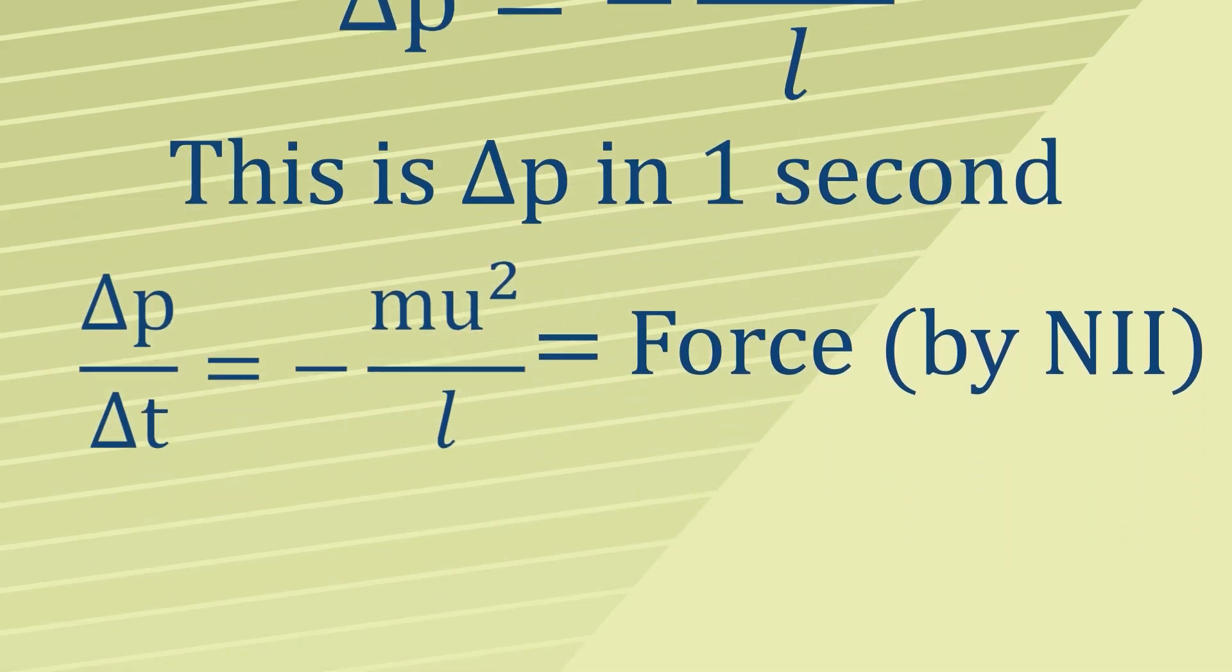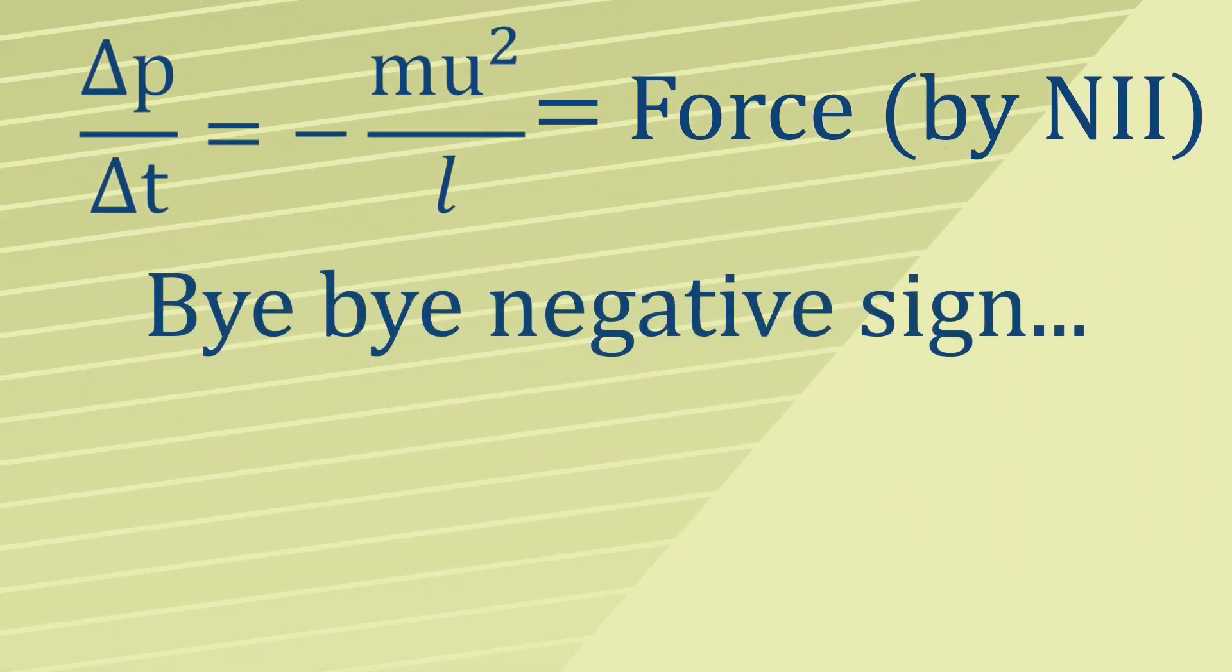But we're interested in the force of the particle on the wall, which is going to be causing the pressure of the gas on the box. Therefore, because of Newton's third law, we can just say that these two forces are of the same size but opposite signs. Therefore, this force with a plus instead of a minus is the same as the force that will cause the pressure on the wall of the box.